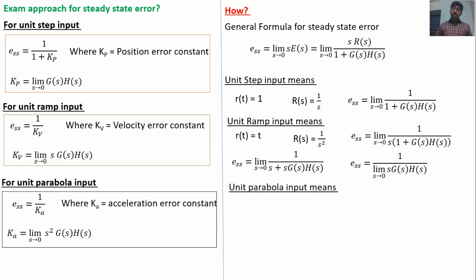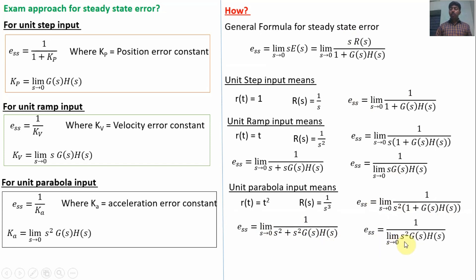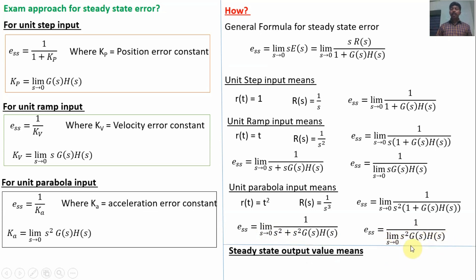For unit parabolic input, R(t) = t², so R(S) = 1/S³. Substituting: E_ss = limit S→0 of S·(1/S³)/[1+G(S)H(S)] = limit S→0 of 1/(S²·[1+G(S)H(S)]). As S→0, this gives E_ss = 1 / [limit S→0 of S²·G(S)H(S)] = 1/Ka, where Ka is the acceleration error constant.